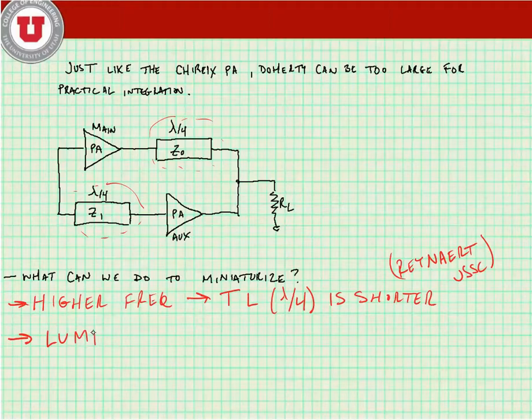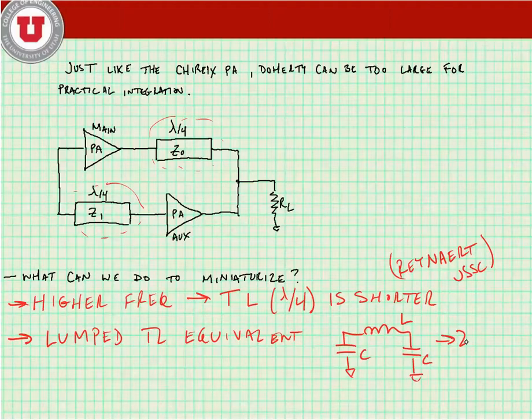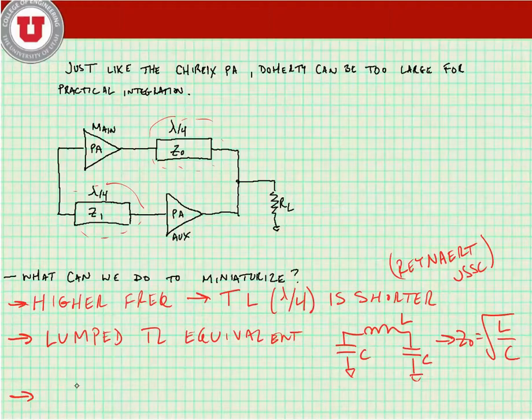Another way that we can do it is using lumped TL equivalent. This is where we have our CLC structures, and our characteristic impedance is equal to root L over C.